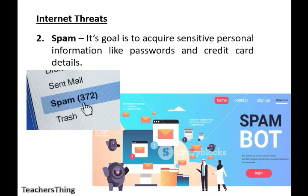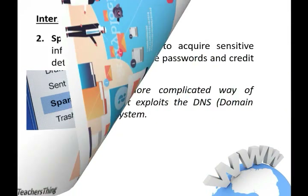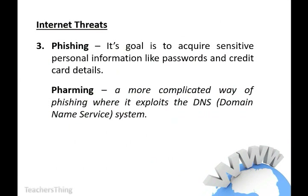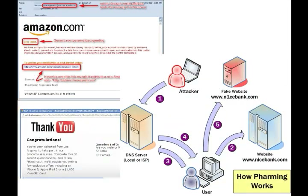Spam: it is an unwanted email mostly from bots or advertisers, and it can be used to send malware. Phishing: its goal is to acquire sensitive personal information. A more complicated way of phishing is called pharming — it exploits the DNS system of the computer.